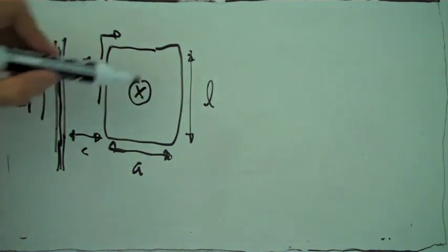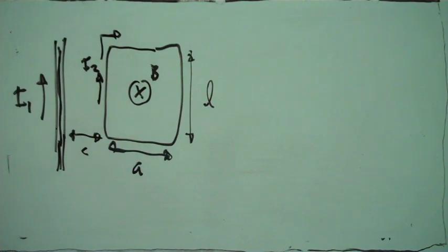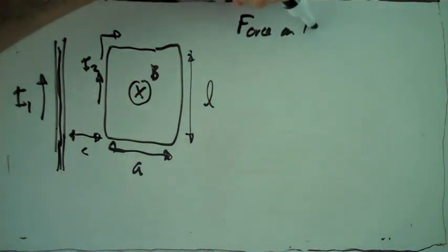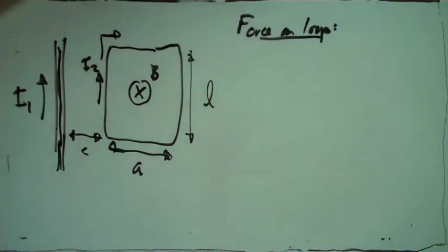The straight wire produces a magnetic field going into the page everywhere here on the right of the straight wire.